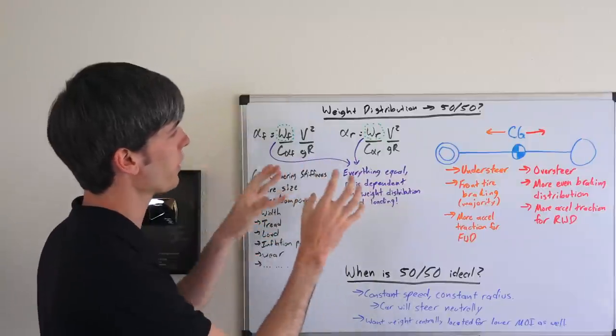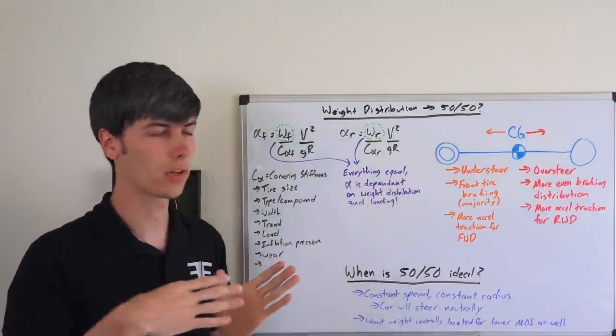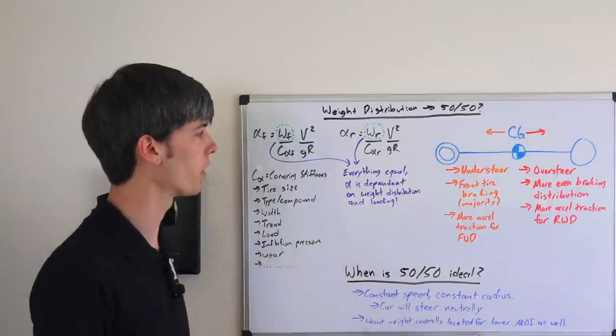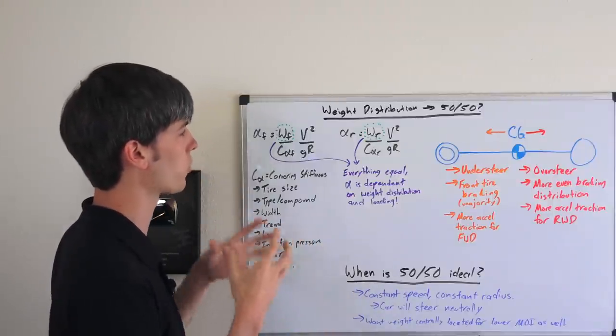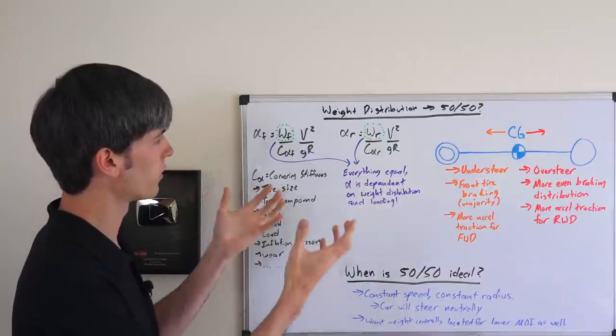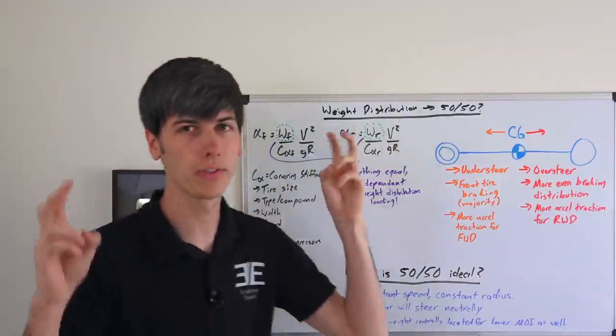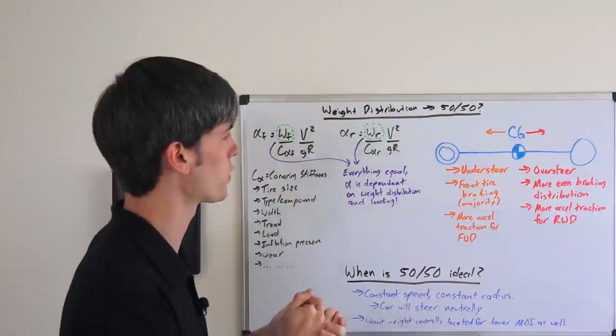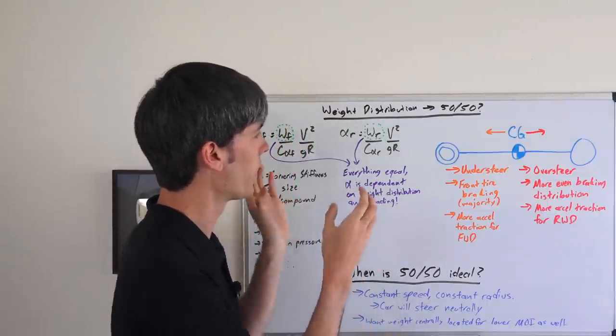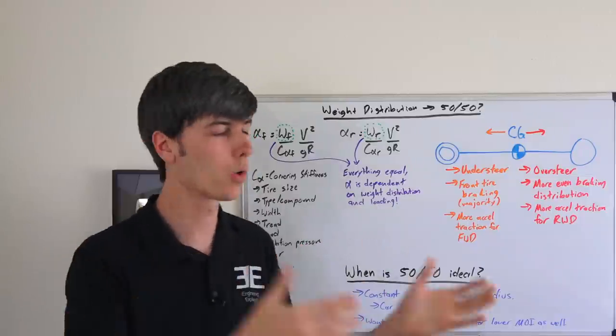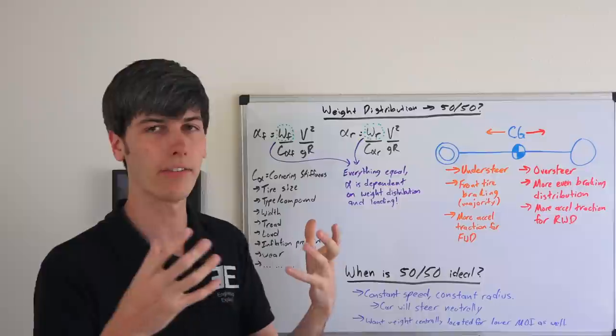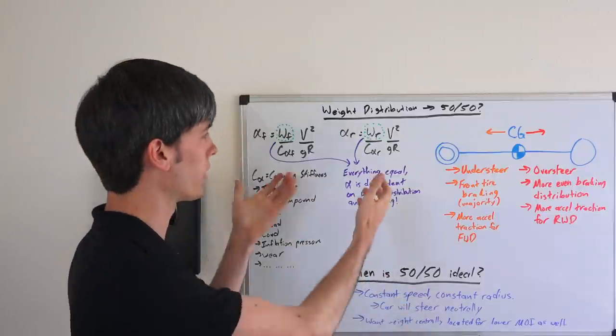So everything equal, with a car going around a corner, the characteristics of whether it will understeer or oversteer is purely dependent upon its weight distribution and the loading. This is important because this is where the 50-50 ideal weight distribution comes from. If you have half of the weight on the front and half on the rear while going around a corner at constant speed and constant radius, you're going to have a neutrally steering car because the slip angles will be the same.